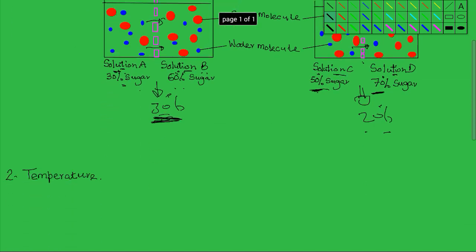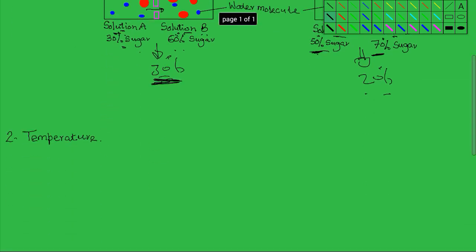The second factor that affects the rate of osmosis is temperature. The higher the temperature, up to a certain point, the faster the rate of osmosis. This is because high temperature tends to increase the kinetic energy of water molecules, so they move at a faster rate, thereby bringing about a faster rate of osmosis.